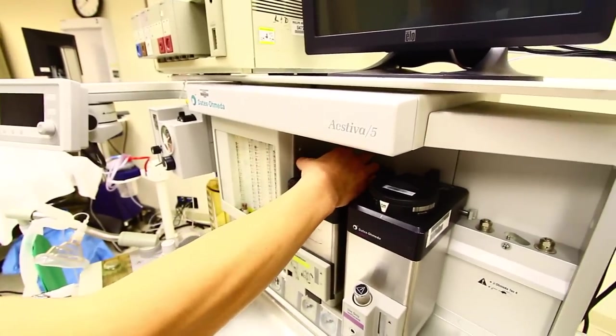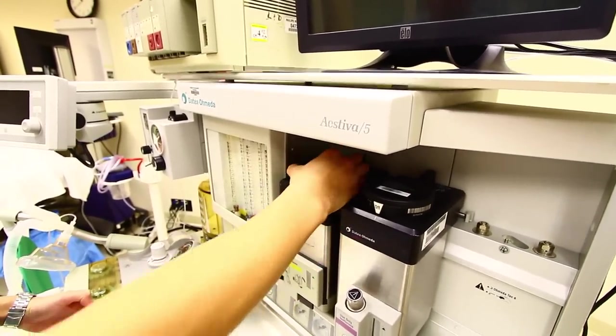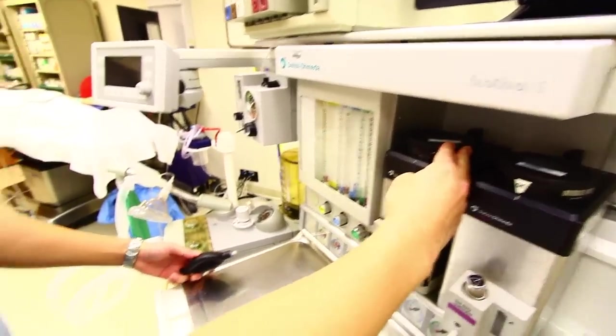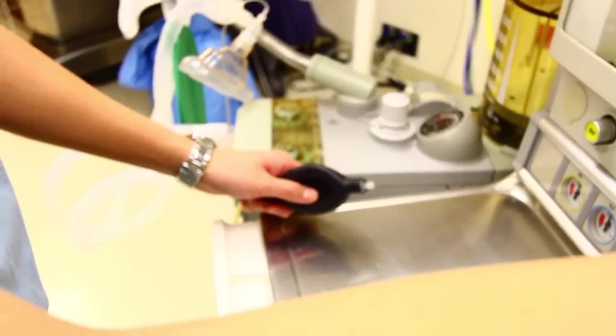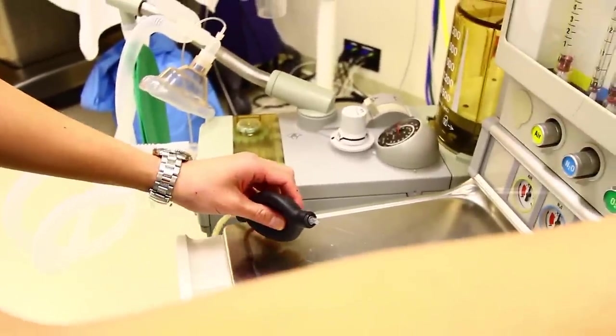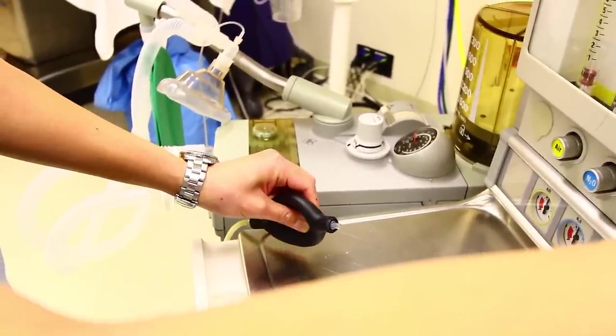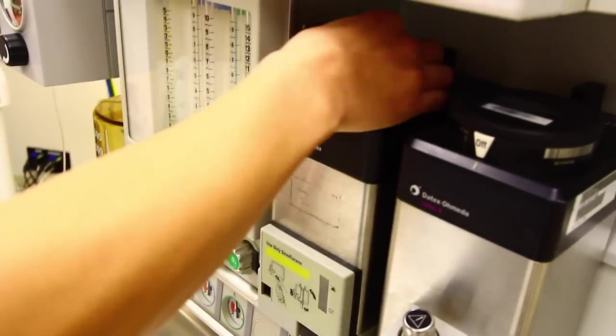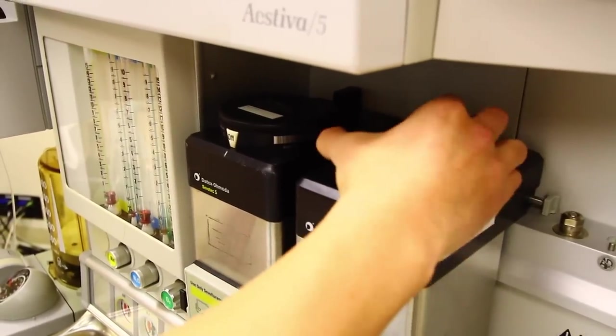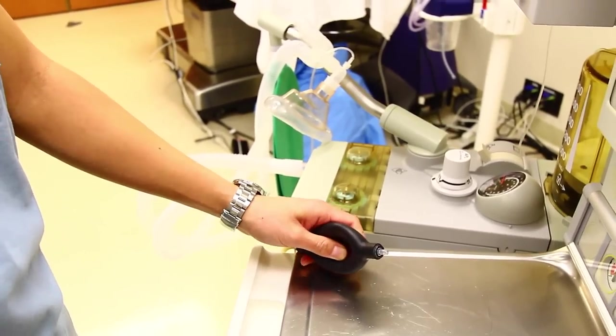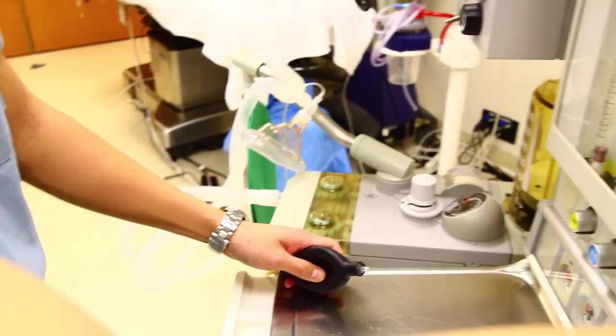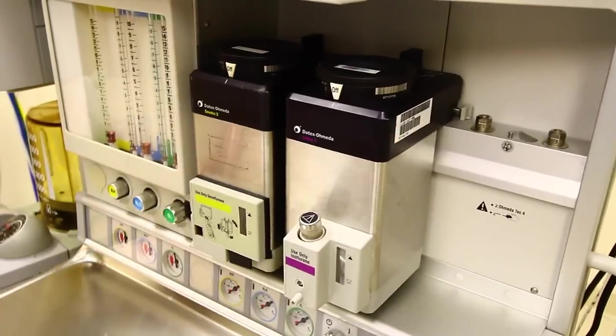Now open each vaporizer one at a time. Sometimes you'll notice the suction bulb will lose its vacuum, so you'll need to squeeze the bulb until it's collapsed. Now repeat the previous steps for each consecutive vaporizer. Make sure to close each vaporizer when you're done.